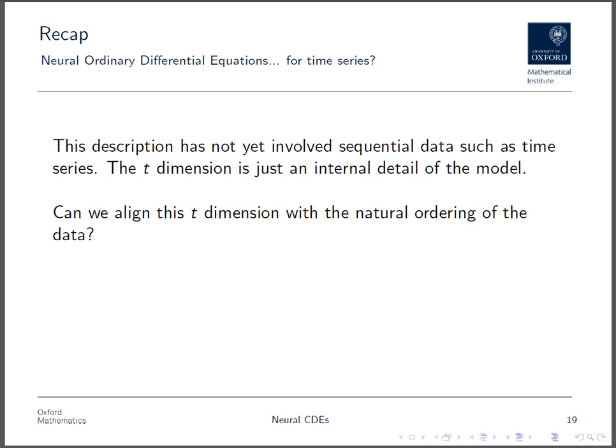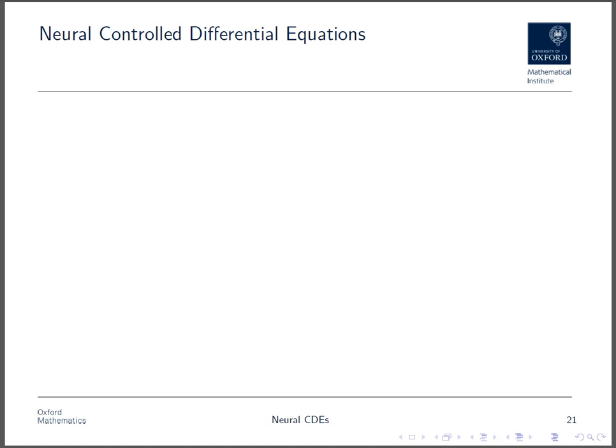What we'd like is to align it with the natural ordering of the data in a time series. The problem is that the solution to an ordinary differential equation is determined by its initial condition, so there's no way to adjust the trajectory based on data that arrives later in a time series. It turns out that the resolution to this is already a well-understood problem in mathematics in the field of rough analysis, which studies controlled differential equations.